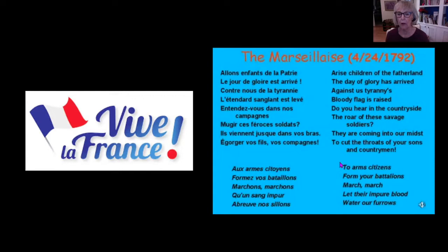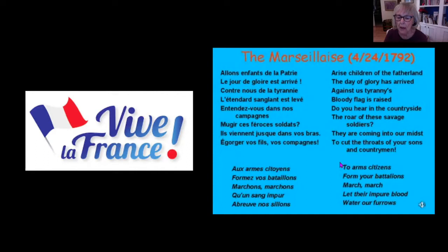The Marseillaise is a very bloody battle cry: 'Arise, children of the fatherland. The day of glory has arrived against us. Tyranny's bloody flag is raised. Do you hear in the countryside the roar of these savage soldiers? They are coming into our midst to cut the throats of your sons and countrymen. To arms, citizens! Form your battalions. March, march! Let their impure blood water our furrows.' The Marseillaise was started in the middle of the French Revolution.